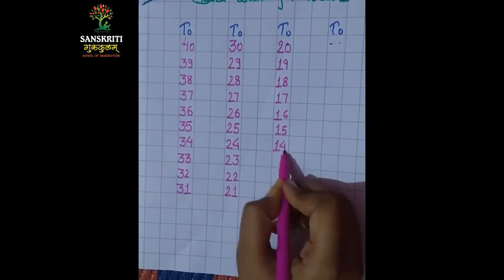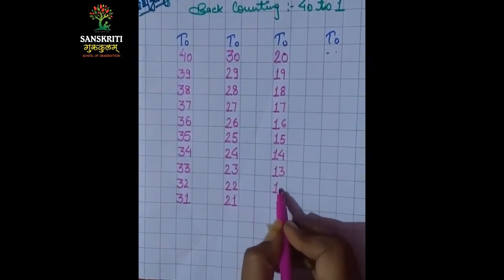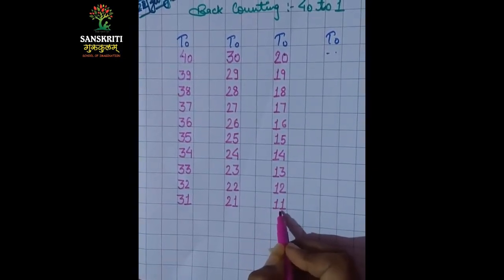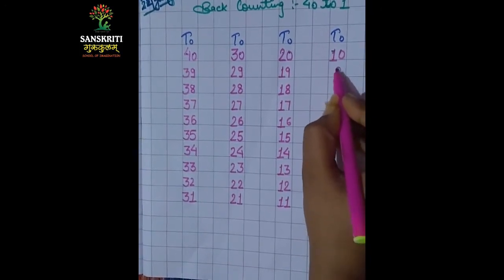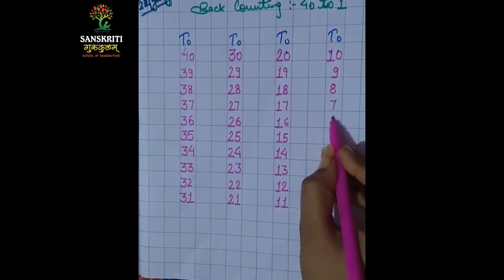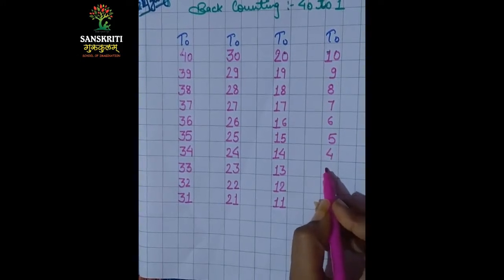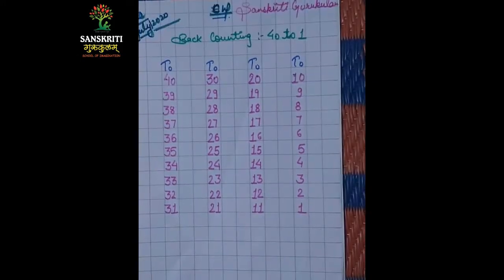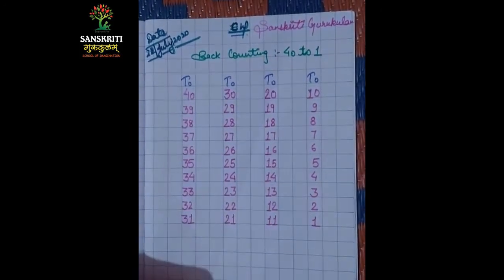14... 13... 12... 11. We have seen from 40 to 1 — how did we do backward counting?